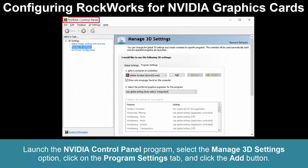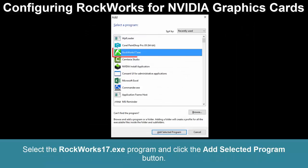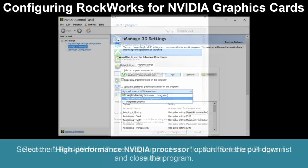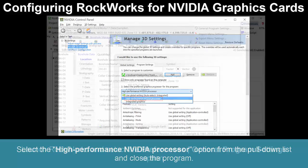Launch the NVIDIA Control Panel program, select the Manage 3D Settings option, click on the Program Settings tab, and click the Add button. Select the Rockworks 17.exe program and click the Add Selected Program button. Then select the High Performance NVIDIA Processor option from the pull-down list and close the program.